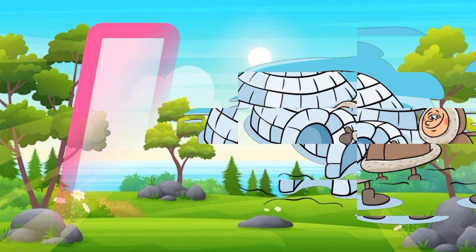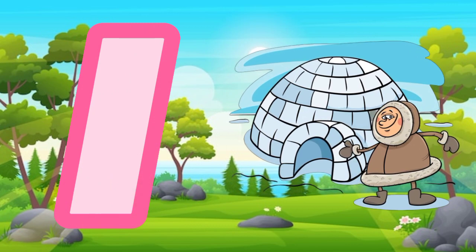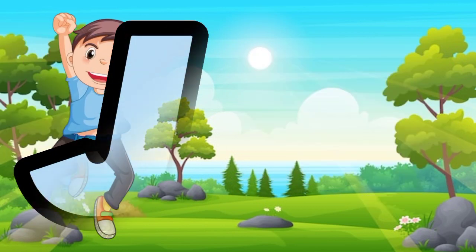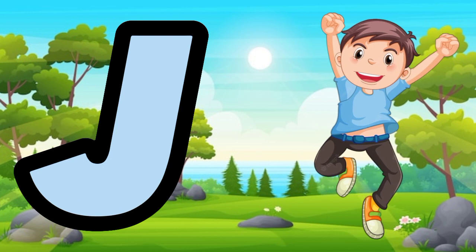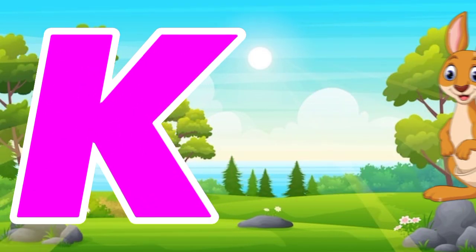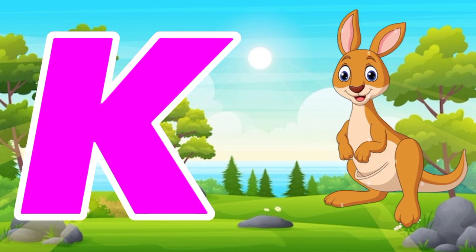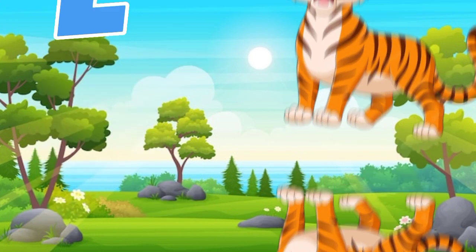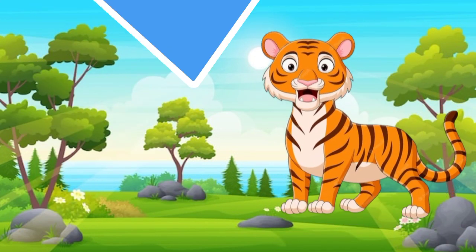I is for igloo, i-i-igloo. J is for jump, j-j-jump. K is for kangaroo, k-k-kangaroo. L is for lion, l-l-lion.